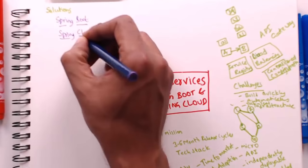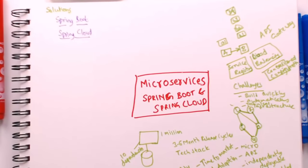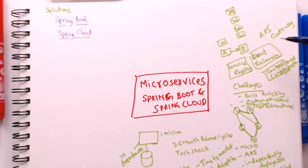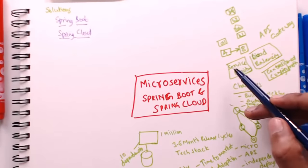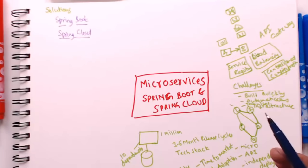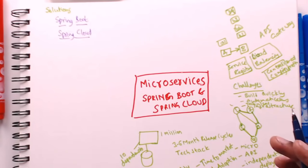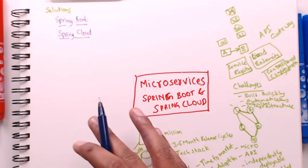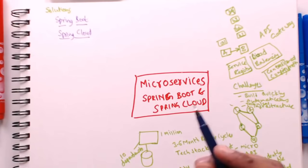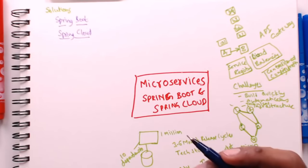Solution number two is Spring Cloud. Spring Cloud is actually not a single project — it's a group of projects which help you build a number of microservices. Using Spring Cloud you can build a service registry with Eureka, do load balancing using Ribbon, create API gateways using Zuul, and have centralized configuration with Spring Cloud Config Server. It provides all the tools you need to set up the technical infrastructure for your microservices.